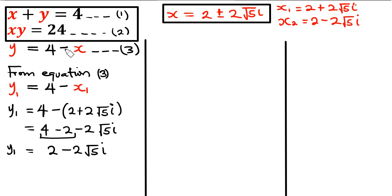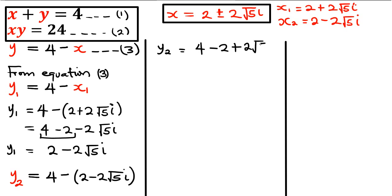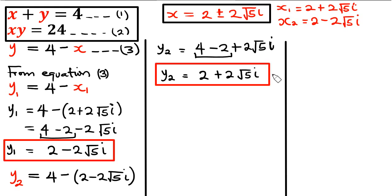To get y2, I'll use equation 3 again, substituting x2 equals 2 minus 2 root 5 i. So y2 equals 4 minus (2 minus 2 root 5 i). That gives 4 minus 2, which is 2, and minus times minus 2 root 5 i gives plus 2 root 5 i. Therefore y2 equals 2 plus 2 root 5 i.